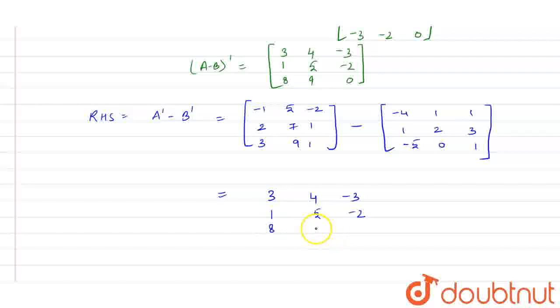2 minus 1 is 1, 7 minus 2 is 5, 1 minus 3 is minus 2, 3 minus of minus 5 is 8, 9 minus 0 is 9, and 1 minus 1 is 0. So this is the value of RHS.